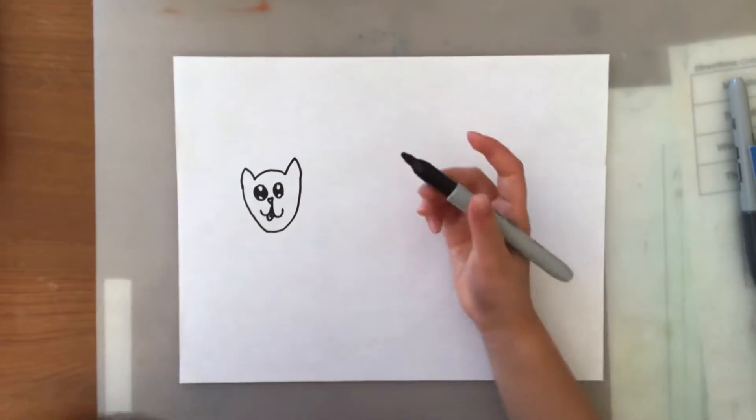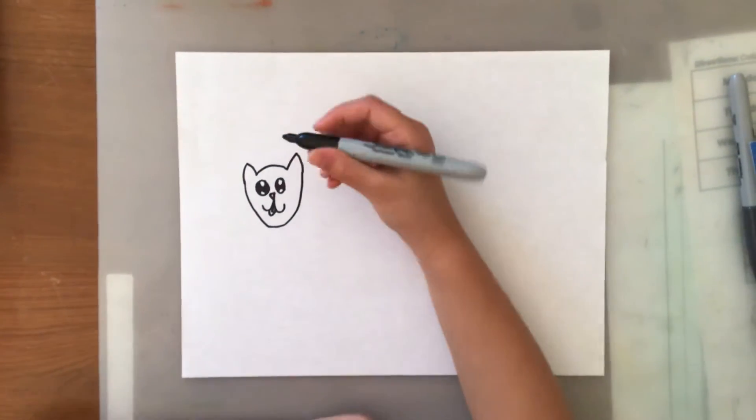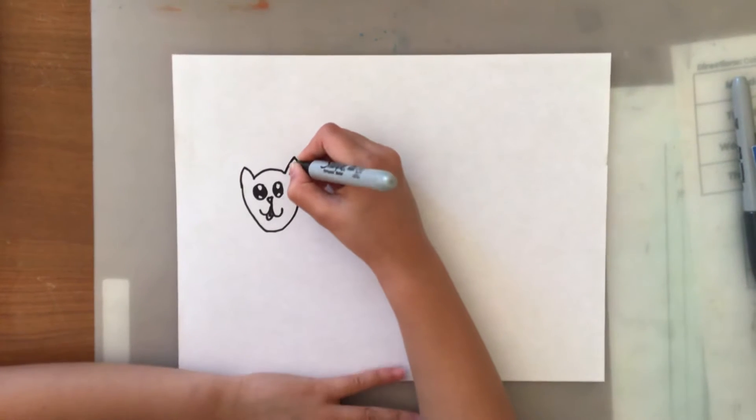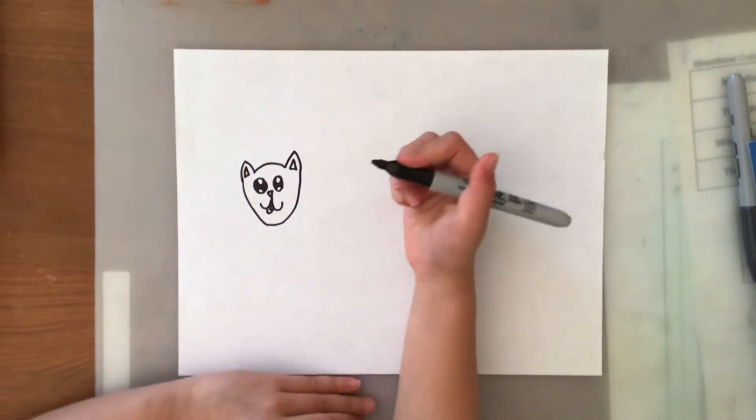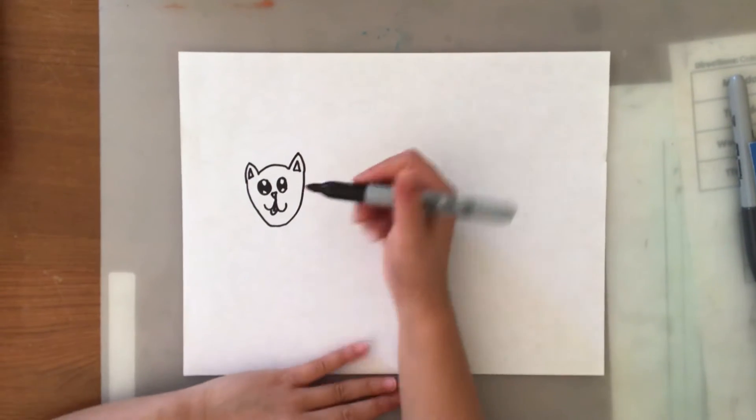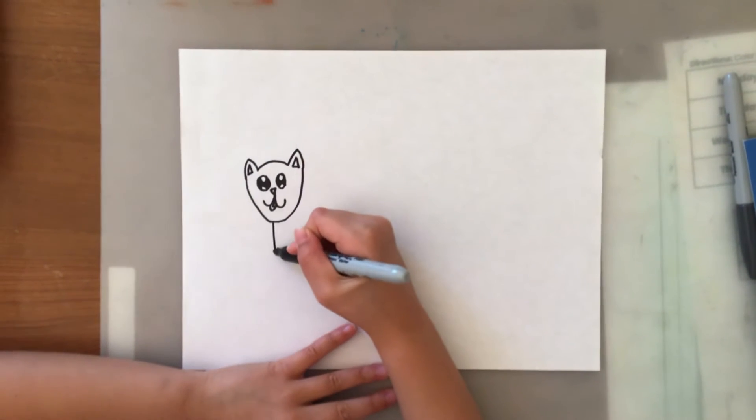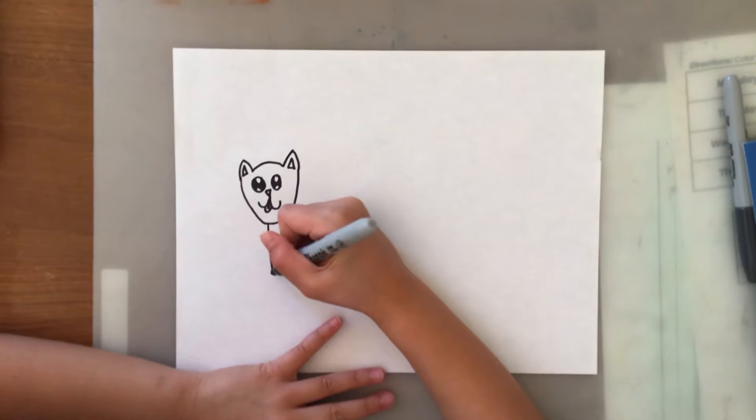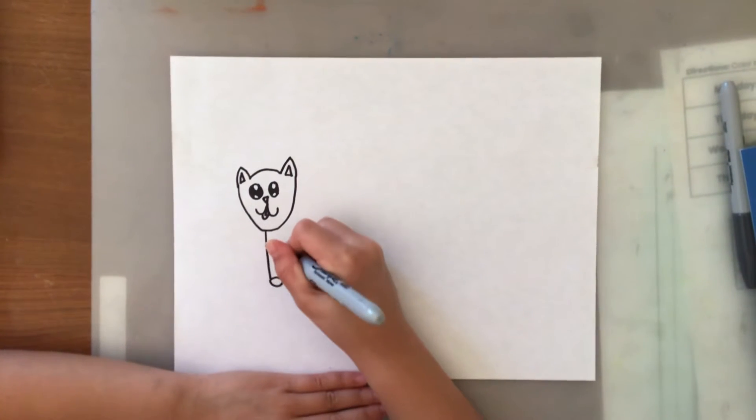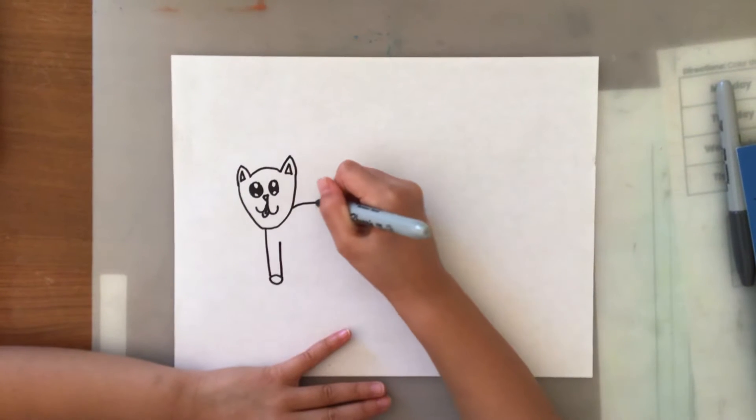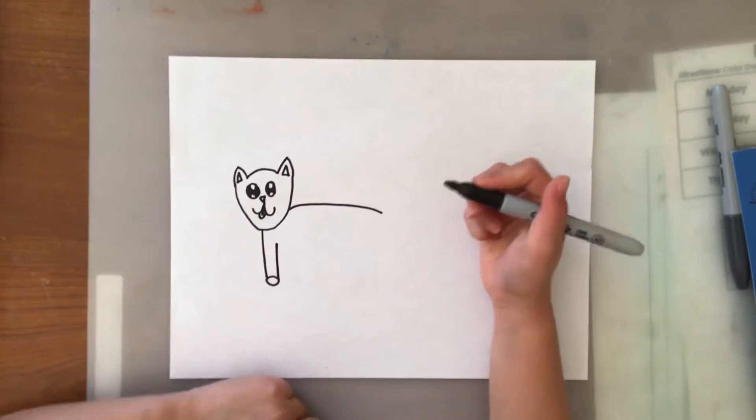We still need to do the body, but first we need to draw a little triangle inside of each ear for the inside of the cat's ear. Then let's draw a straight line down, an oval, a straight line up, a U that is long.